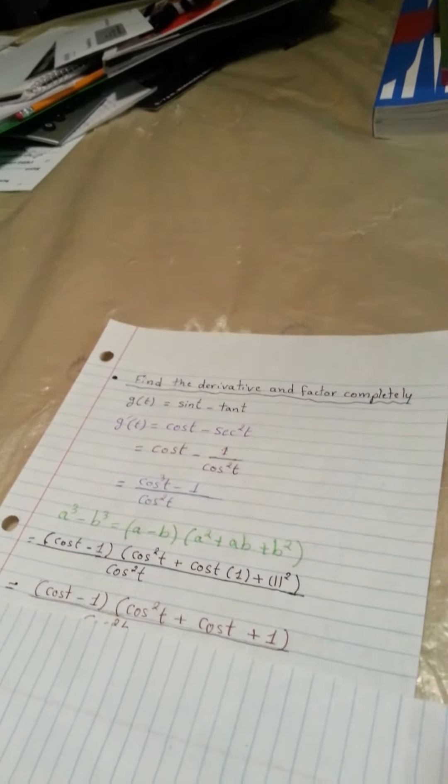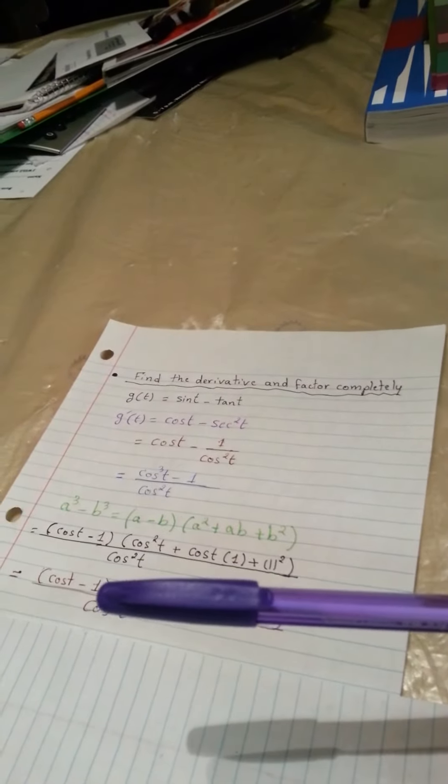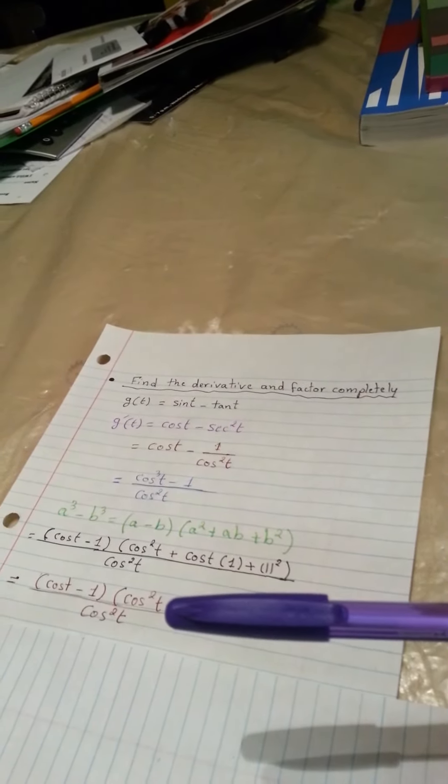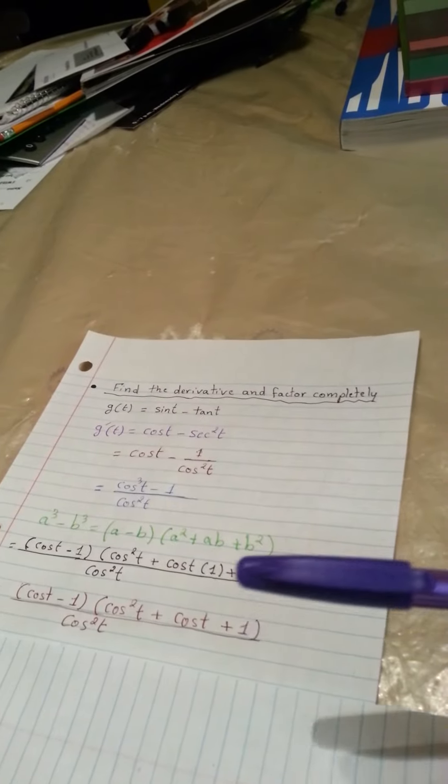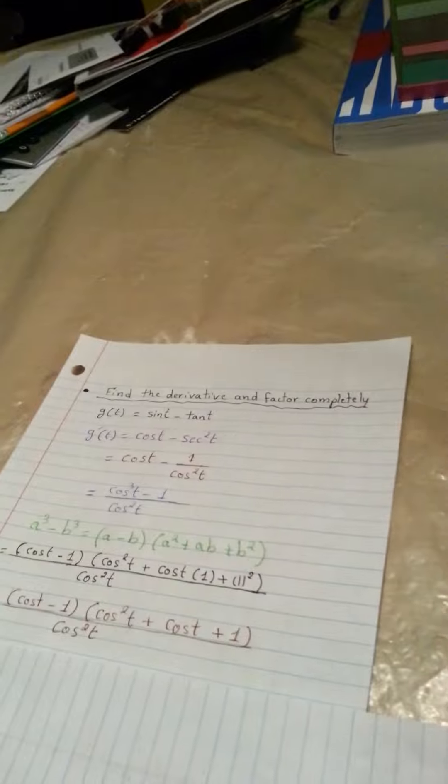There, we will come with the final answer of cosine t minus 1 times cosine squared t plus cosine t plus 1 over cosine squared t.